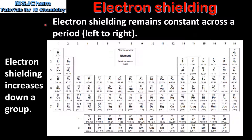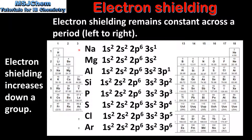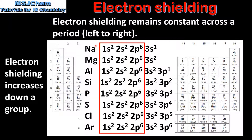Next we look at the trend in electron shielding across a period and down a group in the periodic table. Electron shielding remains constant across a period from left to right. Here we have the electron configurations for all the elements in period 3 from sodium to argon. If we highlight the shielding electrons within each atom we can see that the number of shielding electrons remains the same for each element, as the valence electrons are found in the third main energy level.